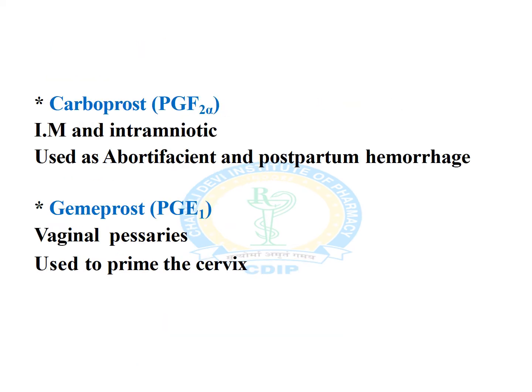Carboprost and gemeprost are also PGF2 alpha analogs, used intramuscularly or intra-amniotically to induce abortion or to control postpartum hemorrhage. However, gemeprost is used as vaginal pessaries and is mainly used to prime the cervix.